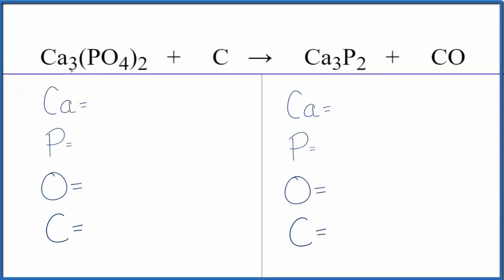In this video we'll balance the equation for calcium phosphate plus carbon to get calcium phosphide and carbon monoxide. These will be solids; carbon monoxide will be a gas. I'm guessing there's probably heat involved to make this happen.